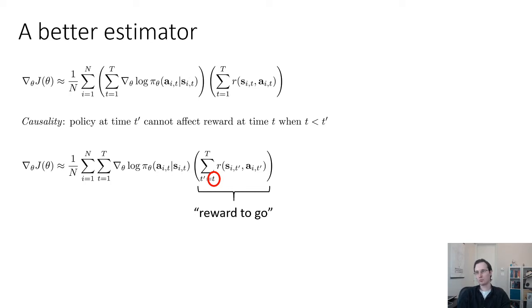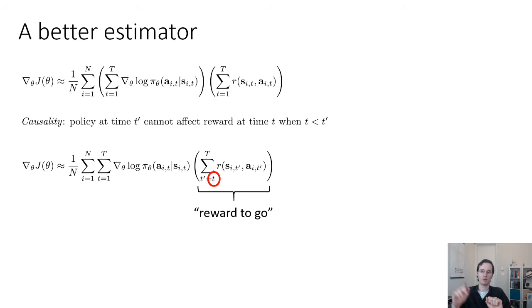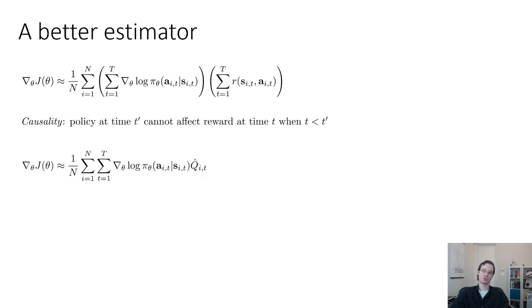The interpretation of this sum as the reward-to-go — the total reward you will get from now until the end — will be very important in the next lecture when we talk about value functions. This theme of taking the gradient of the log probability of an action and multiplying it by the total future reward will keep coming up in reinforcement learning. We call it Q-hat_{i,t}: the reward-to-go for sample i at time step t is the sum over t-prime from little t to capital T of r(s_{i,t'}, a_{i,t'}).